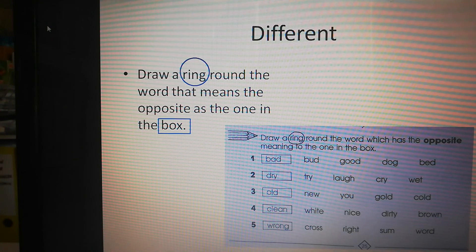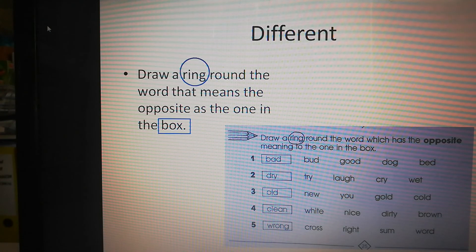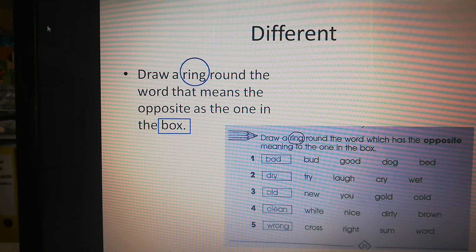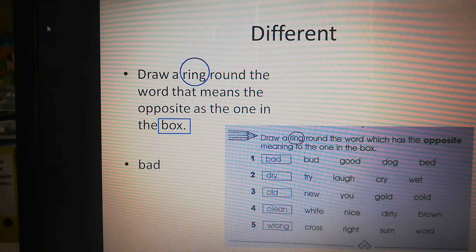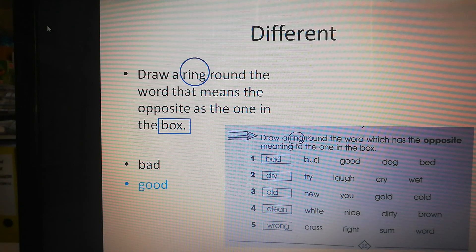Now you're going to draw a ring around the word that means the opposite of the one in the box. So in the box you see there bad. You want the opposite of bad. Is that bud, good, dog or bed? So bad. What's the opposite of bad? The opposite of bad is good. That's right. Draw a ring around good.